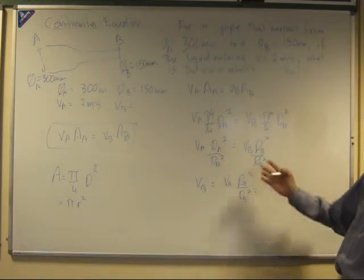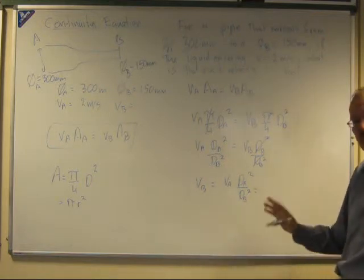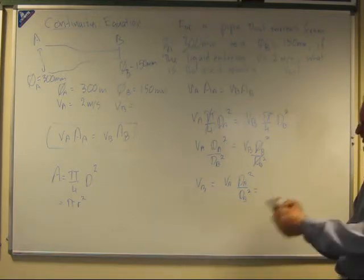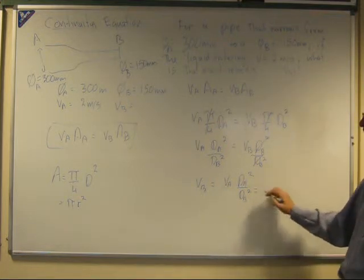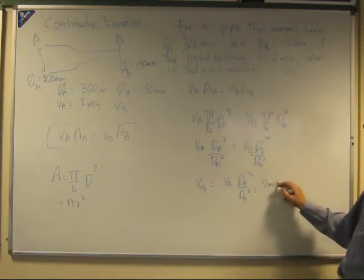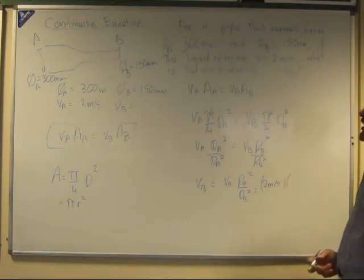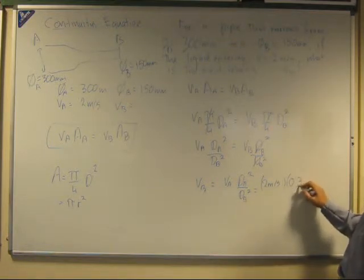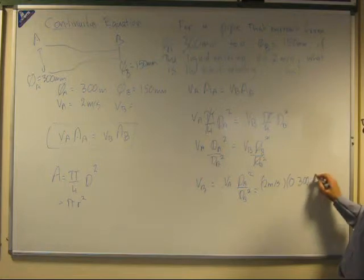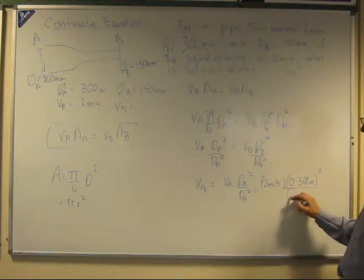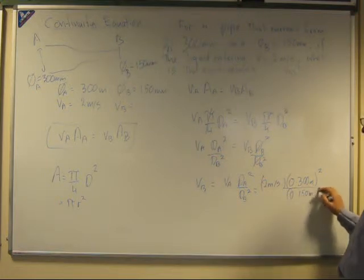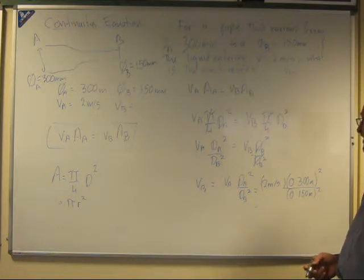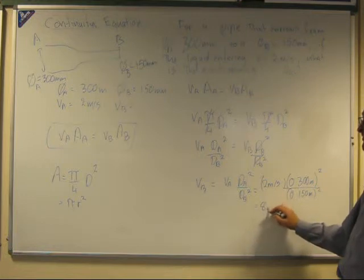Now we plug in numbers, and once we've actually got that rearranged, as a general rule, we rearrange it first, we plug in the numbers, and we work it out. So we've got 2 meters per second times diameter of A is 0.3 meters squared over diameter of B, which is 0.150 meters squared, and we'll get 8 meters per second.